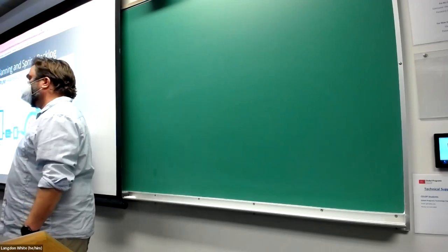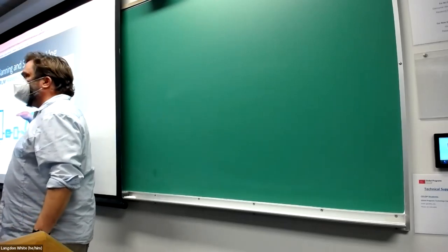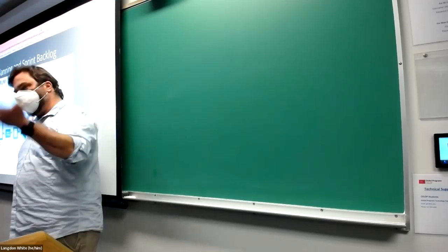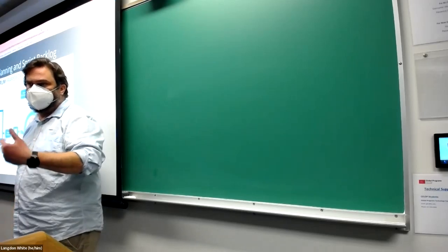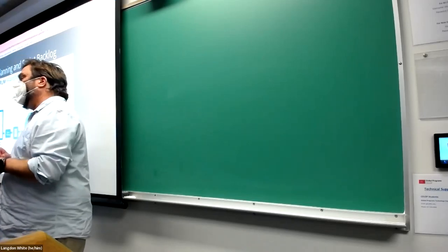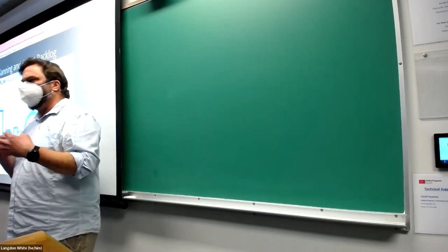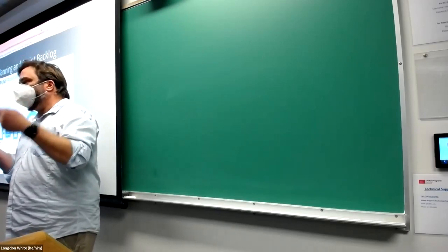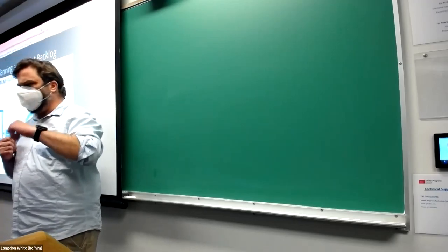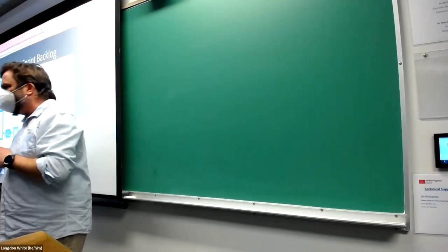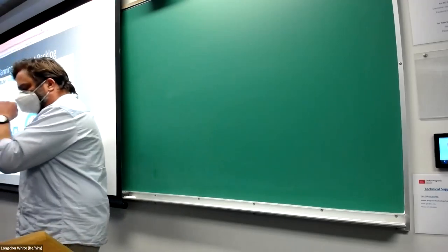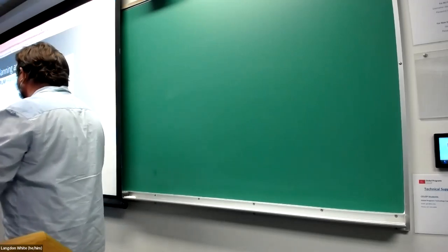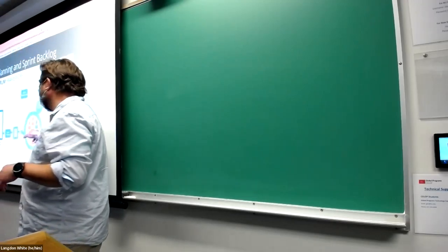The scrum team goes and works on the sprint, and every day they have what's called the daily scrum or daily stand-up. You ask three questions: what did you do yesterday, what are you doing today, and what do you need help with? This keeps the whole team aware of what everyone is working on. It might seem like a waste of time, but sometimes you hear what a colleague is working on and realize there's synergy — maybe you just did something similar under a different name.